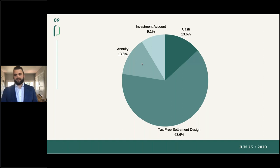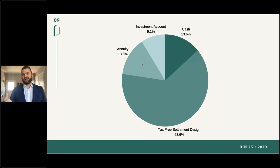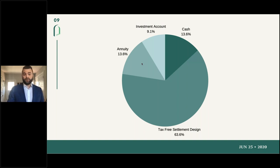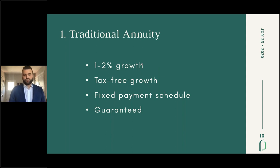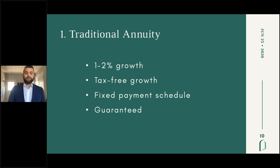Typically when we're planning for a client, we would appropriate the funds appropriately — a specific amount in cash the client wants to take right away, some within an investment account they could withdraw whenever they felt like, some guaranteed income included in an annuity product, but the vast majority in a tax-free settlement design. The best part about an annuity is that it's tax-free growth. However, that growth can be limited — with interest rates being so low right now, it's between 1% and 2%. An annuity also has a fixed payment schedule, and this is what allows it to be tax-free. The payments are also guaranteed.